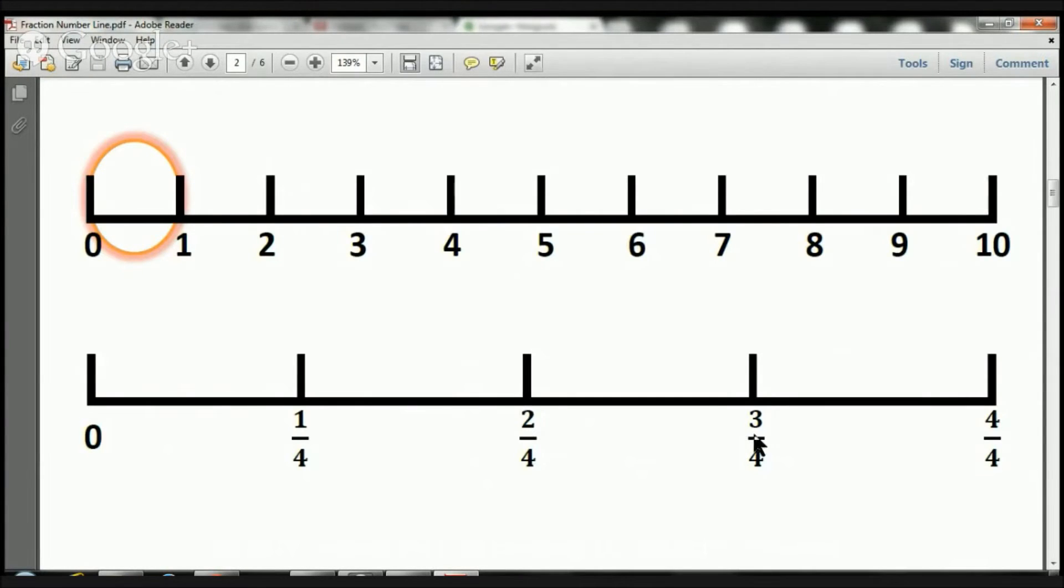Now, from the zero all the way to here, we've got one, two, three pieces. That's going to be three-fourths. And from here, from this zero all the way to the four, we've got one, two, three, four pieces. That's going to be four over four. And remember what I've told you. One over one is one. Two over two equals one. Three over three equals one. Four over four equals one. We're going from zero to one.